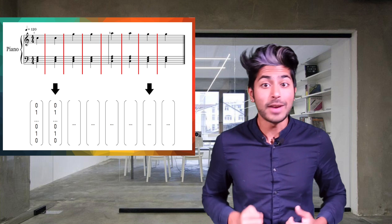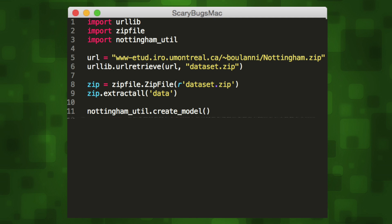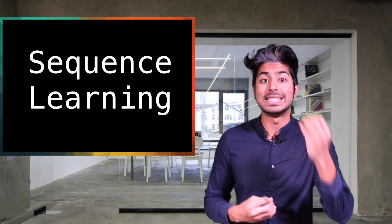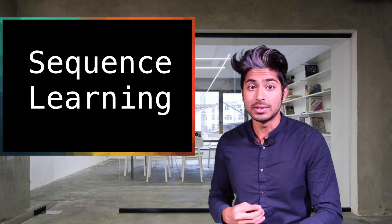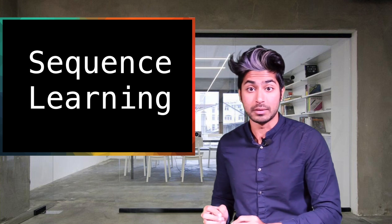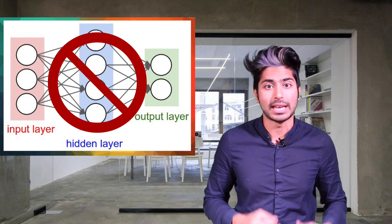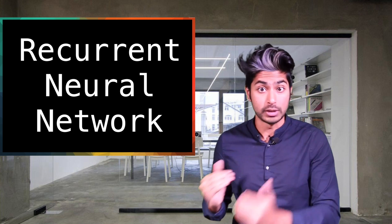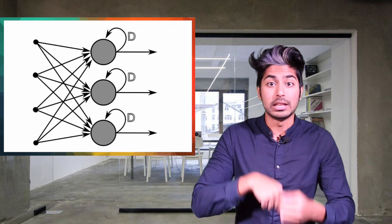We'll then combine them into one big vector and use that as our input. We can just import our ML helper class and call the create model method to do this. Music plays out over a period of time — it's a sequence of notes — so we need to use a sequence learning model. It has to accept a sequence of notes as input and output a new sequence of notes. Plain old neural nets can't do this; they accept fixed-size inputs like an image or a number. We'll need a special kind of neural network: a recurrent neural network. Those can deal with sequences since data doesn't just flow one way — it loops.